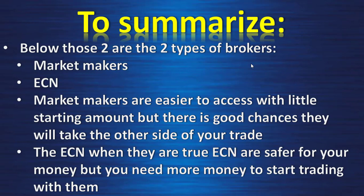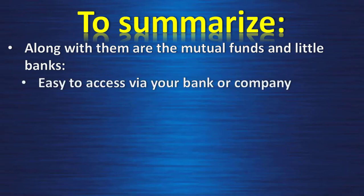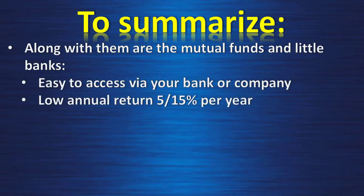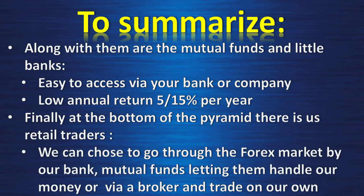You can use this demonstration account to become a good trader, and when you are profitable and have multiplied your account by six minimum, you go live. Both broker types also use leverage, providing you more money than what you have in your account to trade bigger lot sizes. Along with them are mutual funds and little banks — easy to access via your bank or company, with a low annual return of 5 to 15 percent per year. Finally, at the bottom of the pyramid, there is us — retail traders. We can go through our bank or mutual funds, letting them handle our money, or trade on our own via a broker.